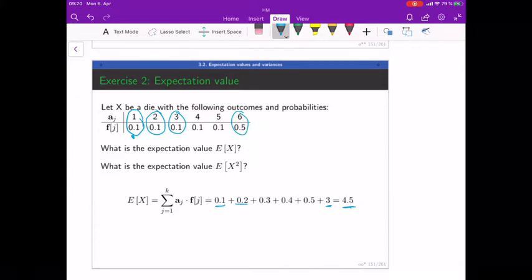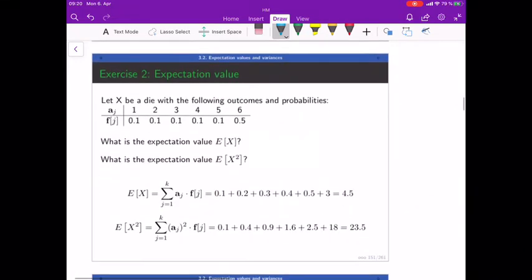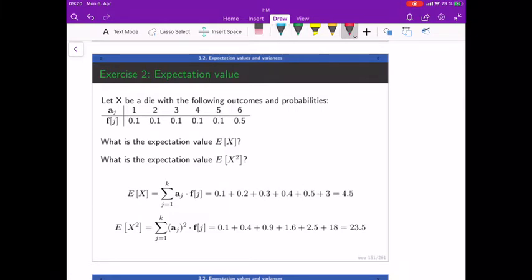What about expectation value of X squared? Well, we know that this to the power of two, the squaring, just applies to the aj's. We just need to square the outcomes. I can write it at the top: one squared is one, then four, nine, sixteen, twenty-five, thirty-six - this is aj squared. Now I can do the same thing: one times 0.1 is 0.1, four times 0.1 is 0.4, and so on. The last couple is 0.5 times 36 is 18.